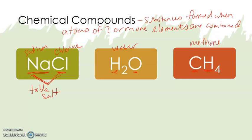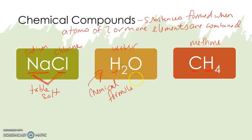In these little boxes, each one of these letters with the numbers — we call this a chemical formula. A chemical formula is just a shorthand way to say what's in a particular chemical. So it tells us water has two hydrogens and an oxygen.